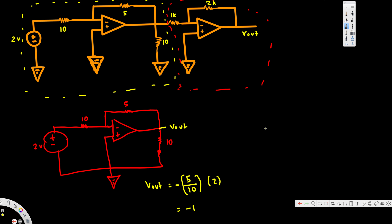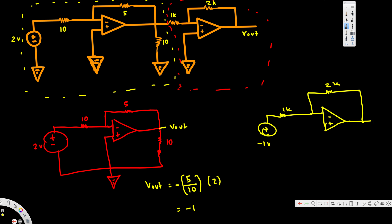Now we use that Vout of -1V as the voltage source for the second stage. The second circuit has a -1V source, a 1k ohm resistor at the input, an op amplifier with minus and plus terminals, a 2k ohm feedback resistor, and the output connected to ground through this configuration.